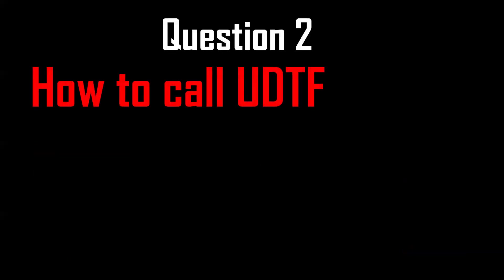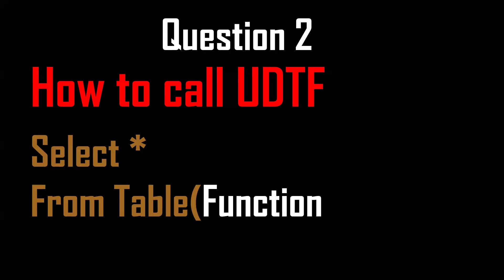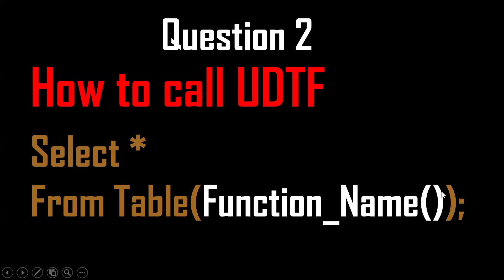The second question is: how to call a UDTF — nothing but User Defined Tabular Function. We use SELECT * FROM TABLE(function_name(args)). If any arguments are there we can pass them — so SELECT * FROM TABLE(function_name).